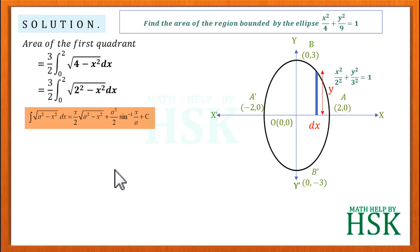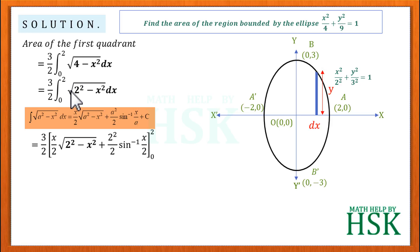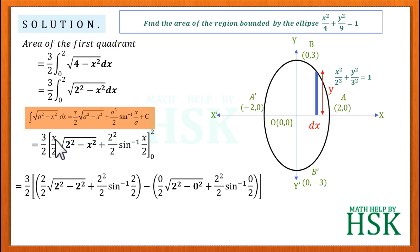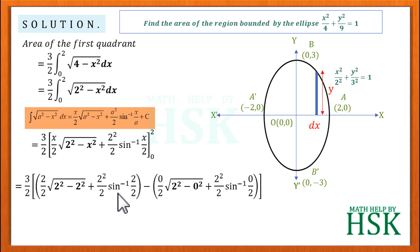Applying this formula with a = 2: Area of first quadrant = (3/2) × [(x/2)√(2² − x²) + (2²/2) sin⁻¹(x/2)] from 0 to 2. At the upper limit x = 2: the first term becomes 0, and the second term gives 2·sin⁻¹(1) = 2·(π/2) = π. At the lower limit x = 0: both terms become 0.